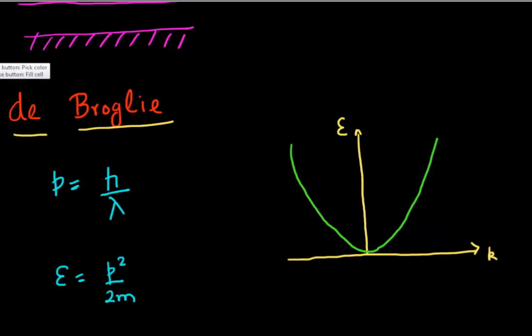I could further expand on it and write this as h bar, where h bar is h divided by 2π, multiplied by 2π by lambda. This 2π by lambda is also known as the k vector or inverse of your wavelength, and I could write this as hk. So my momentum is h cross into k.